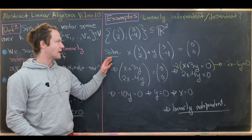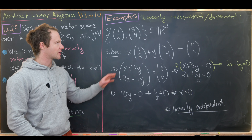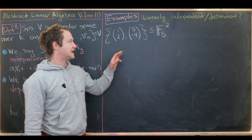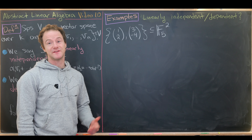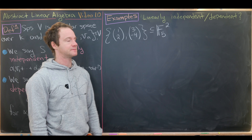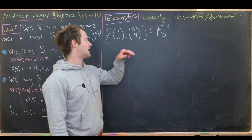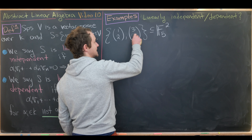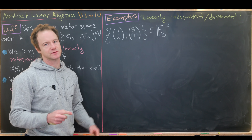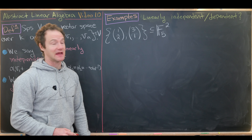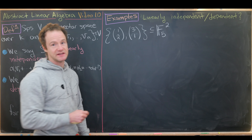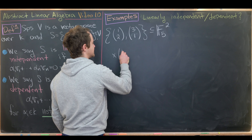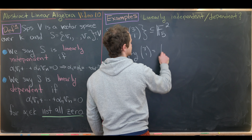Now let's look at the same two vectors but over the finite field F5 — the integers modulo 5. In F5, -4 is the same as 1, so we write the second vector as [3,1]. We take an arbitrary linear combination x·[1,2] + y·[3,1] and set it equal to the zero vector.